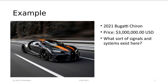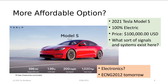When you all graduate and start making money, here's a nice car — it costs about $3 million US. What sort of signals and systems exist here? Or maybe a more affordable option: this is a Tesla, a hundred percent electric vehicle. The price is only a hundred thousand US. What sort of signals and systems exist here? And what sort of electronics?